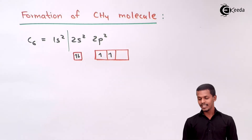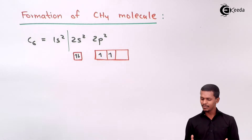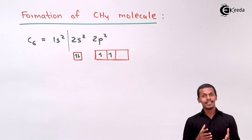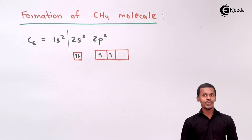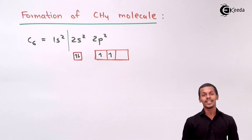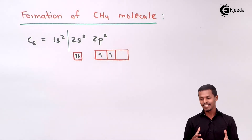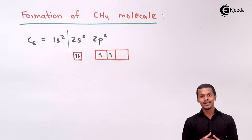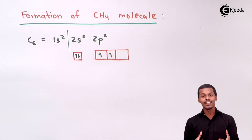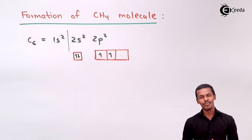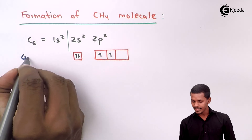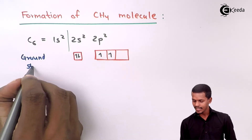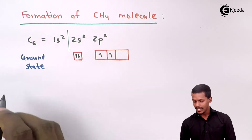Carbon can form four bonds, but looking at this electronic configuration, according to valence bond theory only two bonds are possible. In actual practice, however, carbon forms four bonds. So we will follow the steps of hybridization from our previous lecture. The first step is excitation — we will excite an electron to see how many unpaired electrons carbon will have.